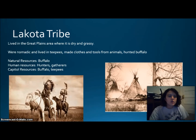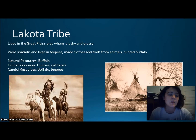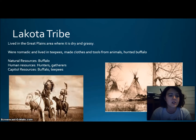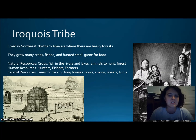The Lakota tribe lived in the Great Plains, where it's dry and grassy. They were nomadic, moving around with the buffalo, and lived in teepees. They made clothes and tools from animals, and buffalo was their main source of food. Natural resources were mainly the buffalo. Human resources were hunters and gatherers. Capital resources were the buffalo and teepees.